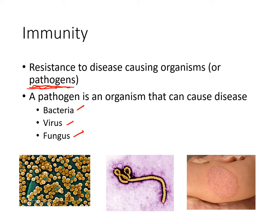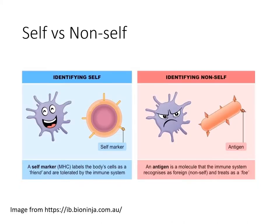Sometimes we are not able to get rid of pathogens fast enough and we get sick, but ultimately the job of the immune system is to destroy the invading pathogens and help us recover from illness. One of the most important features of the immune system is the ability to distinguish self from non-self.